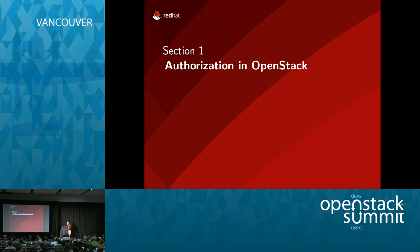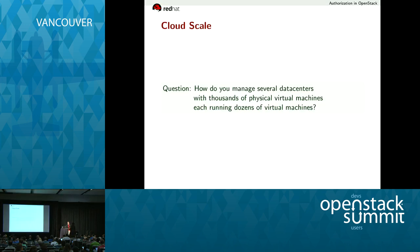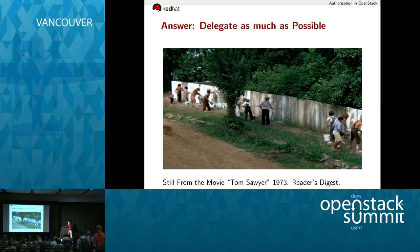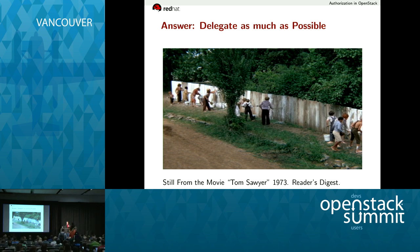Let's talk a little bit about authorization in OpenStack. How do you do things at cloud scale? I've talked about the million-node data center, multiple million-node data centers. How do you do things when you have to operate at scale? Delegate. Delegate as much as possible — get other people to do your work for you. This is the great American ideal as embodied by Tom Sawyer.